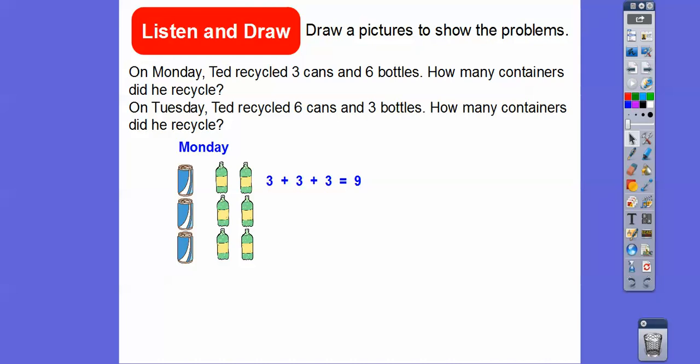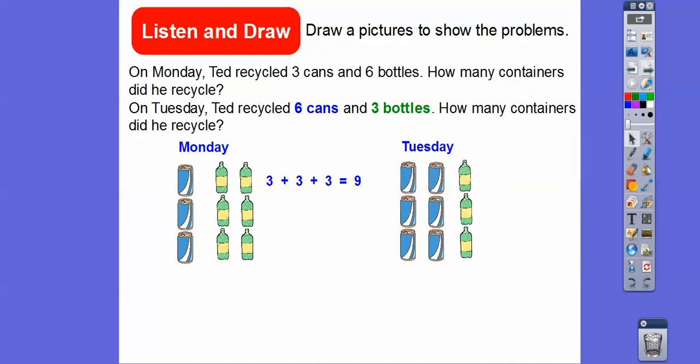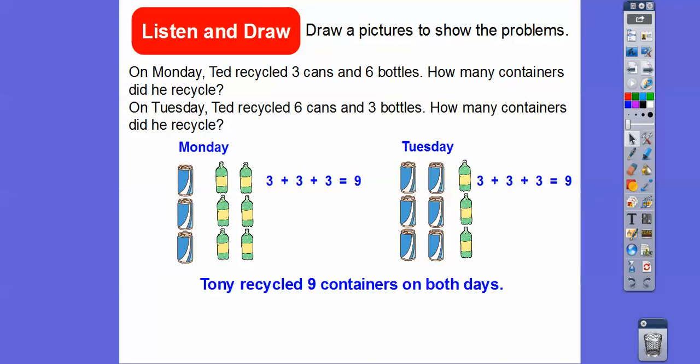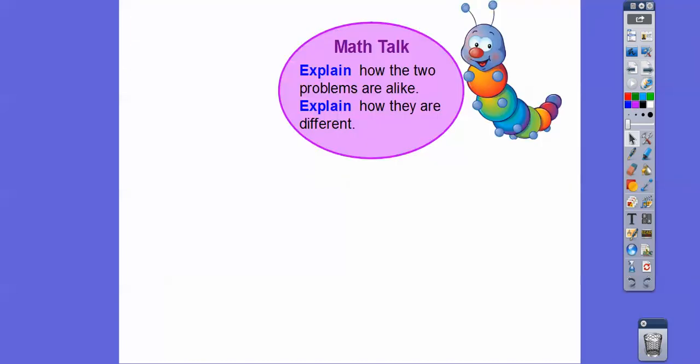On Tuesday, he did six cans. We're going to have six of these cans and just three of these bottles right there. And that also is 3 + 3 + 3, which equals 9 right there. So Tony recycled 9 containers on both days, on both Monday and Tuesday.